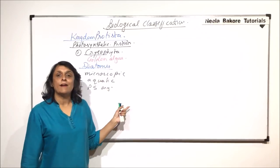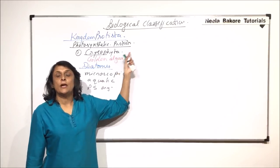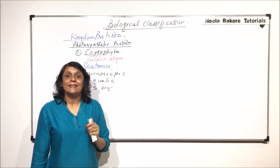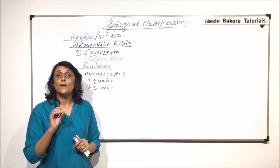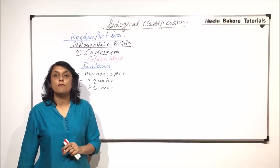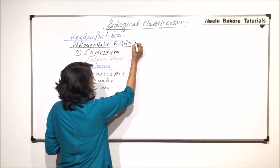When we classify Kingdom Protista into groups, the first group is photosynthetic protists, which includes diatoms, dinoflagellates, and euglenoids. These three together are responsible for about 80% of the photosynthesis.